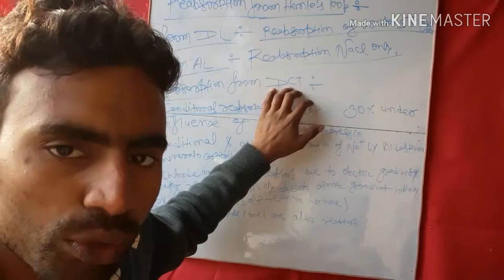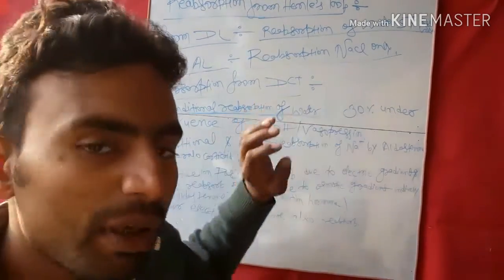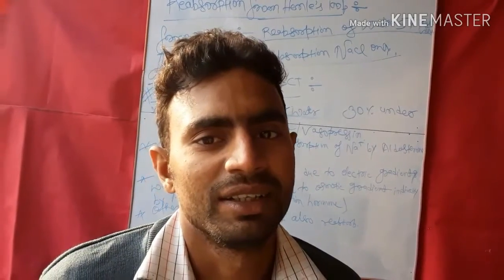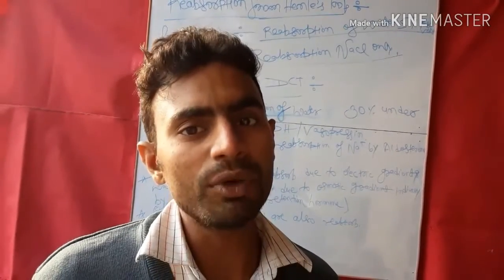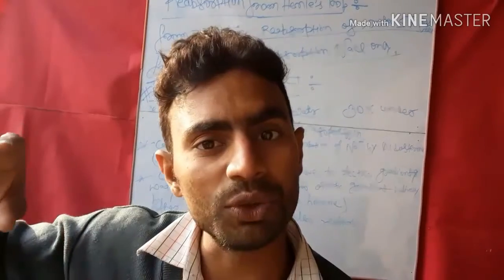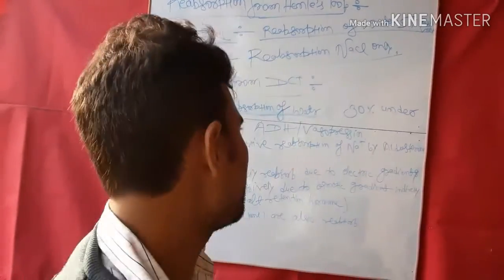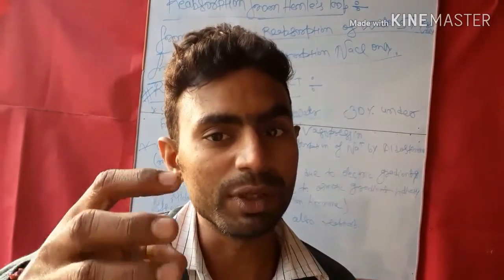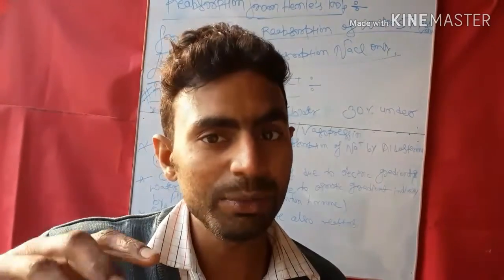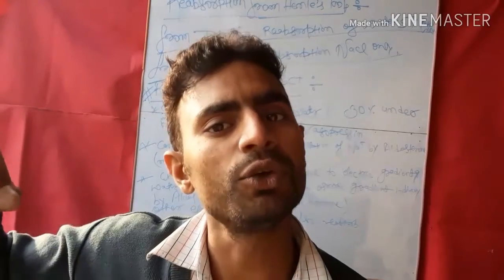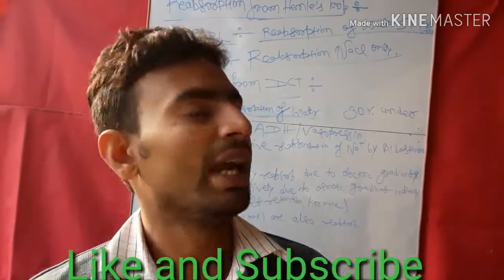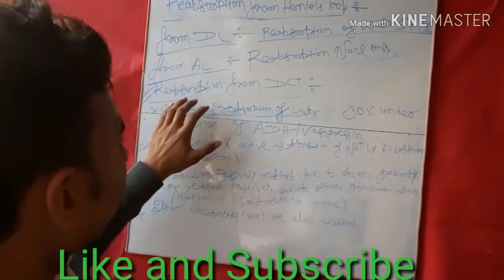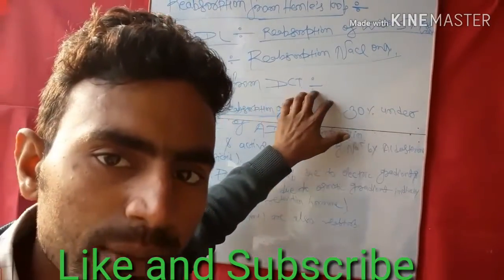The distal convoluted tubule is named 'distal' because it is present far away from the glomerulus, whereas the proximal convoluted tubule — 'proximal' means near — is present near the glomerulus. That is why it is called the proximal convoluted tubule. Now, reabsorption from the distal convoluted tubule: